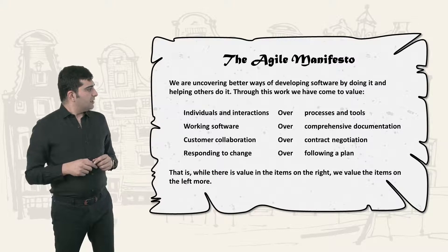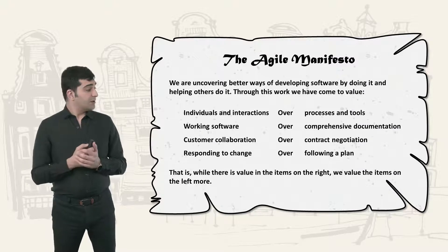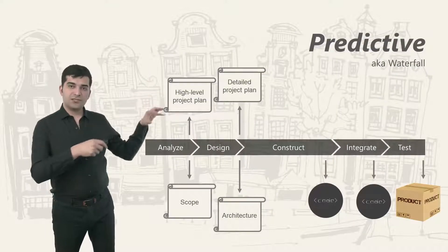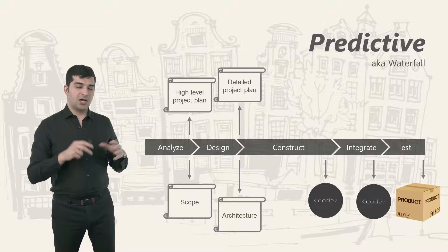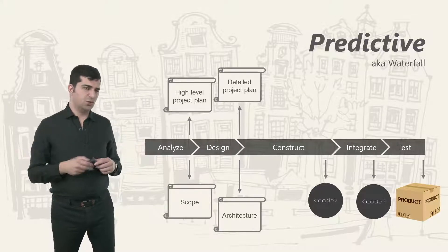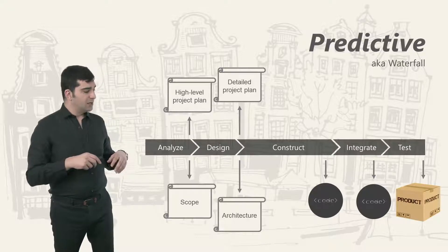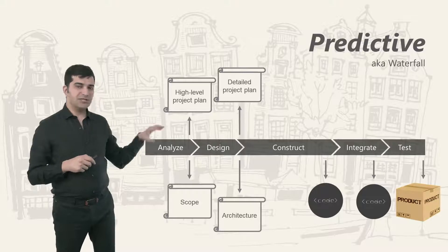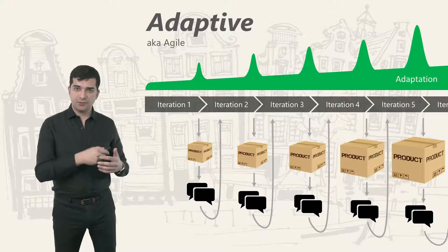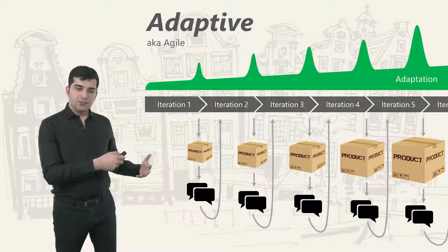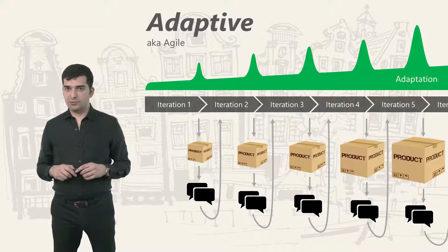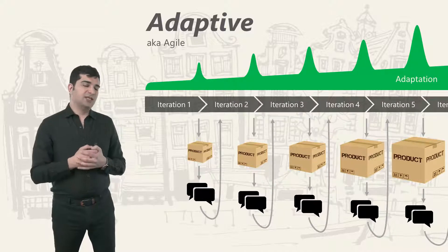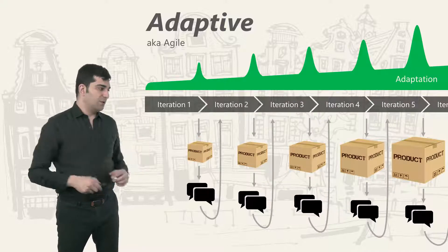The second value is that we value working software over comprehensive documentation. In a predictive system, we have an upfront plan, upfront design — all of that is documentation. We try to understand what we need in the project and then create it. But in adaptive systems, instead of using comprehensive documentation, we go on with the project, adapt to things, and the way we adapt is by creating working software, showing it to the customer, receiving feedback, and using that feedback to decide what to do next.